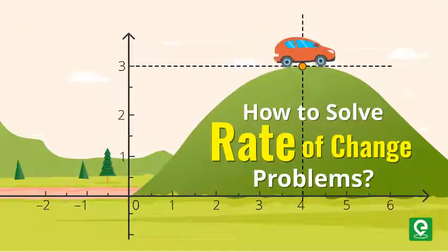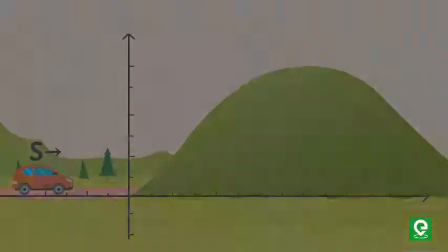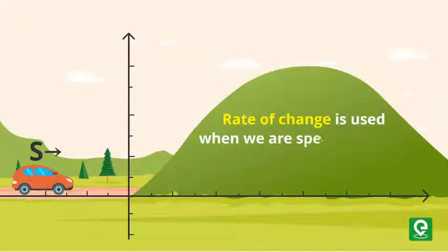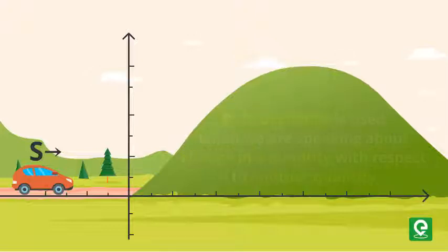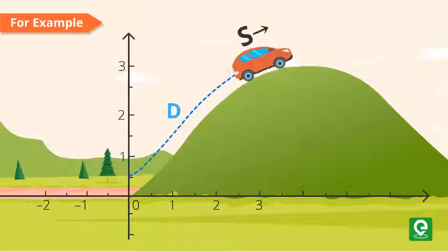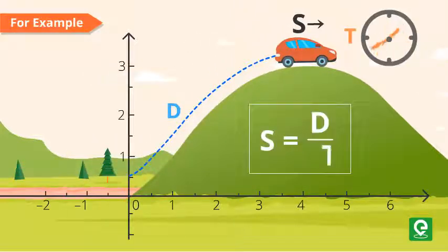How to solve rate of change problems. Rate of change is used when we are speaking about change in a quantity with respect to another quantity. For example, change of distance with respect to change in time gives us speed.